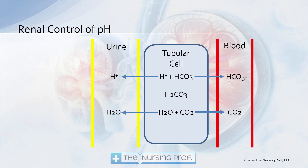Remembering the sides of the equation: bicarb and hydrogen ions are one formation — hydrogen ions being the acid, bicarb being the base. Water and CO2 are the other — CO2 is the acid, and the water would be the base. So we can try to manipulate our blood pH by manipulating how much of the hydrogen ions and water are being dumped by the kidney, or how much of the water and CO2 is being dumped by the lung.